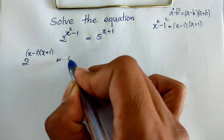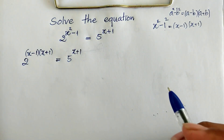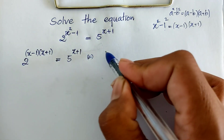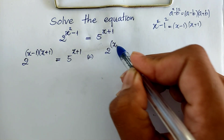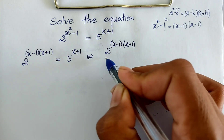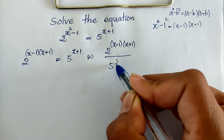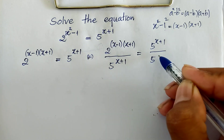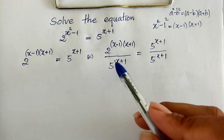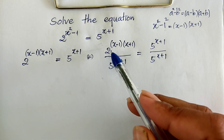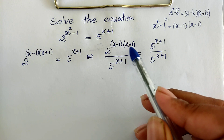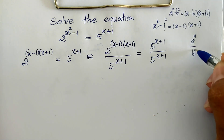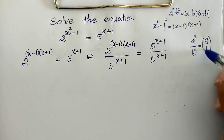Now I divide both sides of this equation by 5 power x plus 1. So we get 2 power (x minus 1)(x plus 1) divided by 5 power x plus 1. I can write 2 power (x minus 1) divided by 5 power (x plus 1). Using the rule that a power n divided by b power n equals (a divided by b) all to the power n.